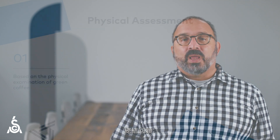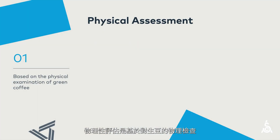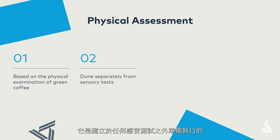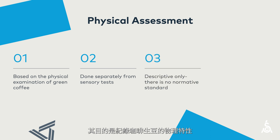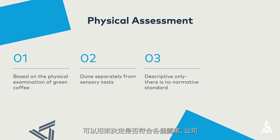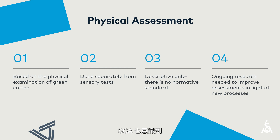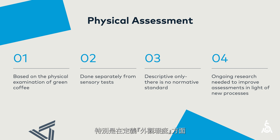In review, the physical assessment is based on the physical examination of green coffee. It's done separately from any sensory tests, and it is meant to document the physical properties of the coffee. The data collected can be used to determine compliance with various standards that a country, company, or certification might require. SCA is aware that new coffee processes may require different approaches, particularly in the definition of physical defect, and is pursuing ongoing research in this area.